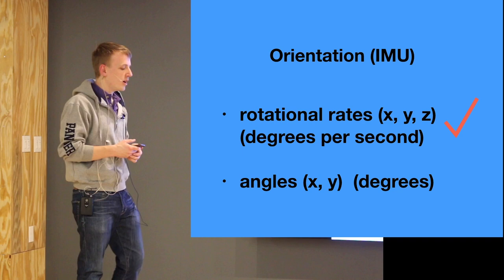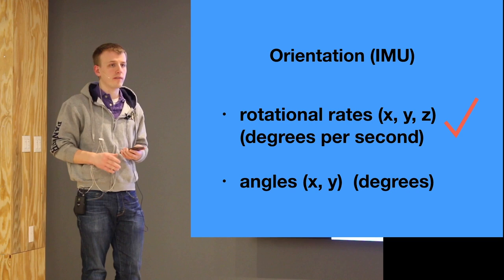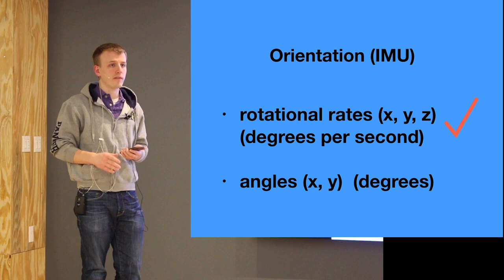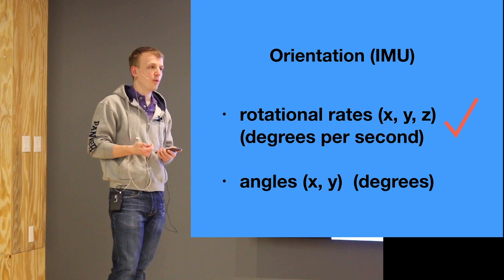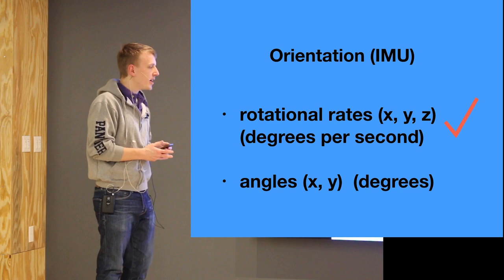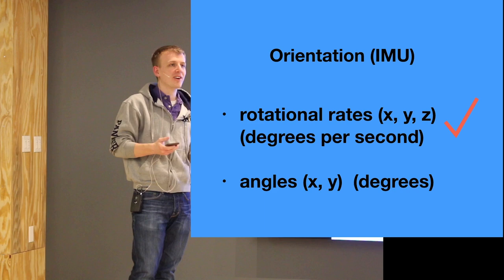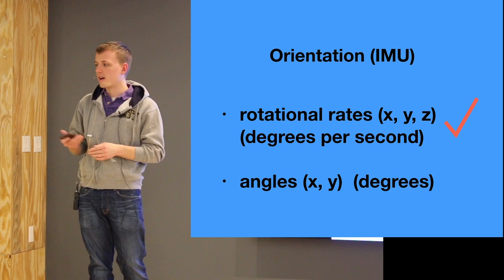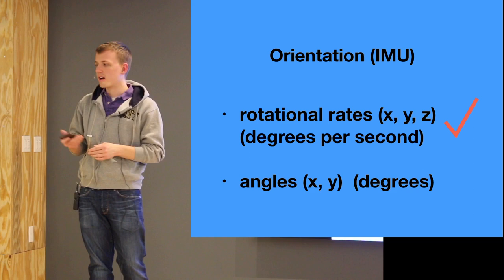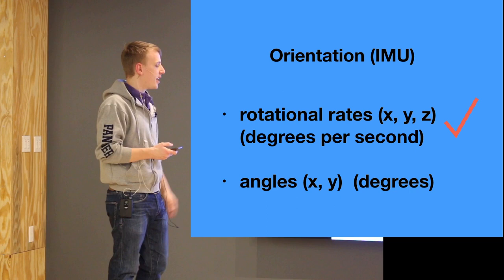You don't want to filter the gyroscope values very much because you want it to react very quickly. If you apply an averaging filter, it delays all the values. Your craft might change direction, but it might take a moment for the filter to catch up. So you basically want your gyroscope values as raw as possible. The device reads at one kilohertz — actually eight kilohertz, but the processor just doesn't do it that fast. A professional-grade gyroscope would probably be faster than that.